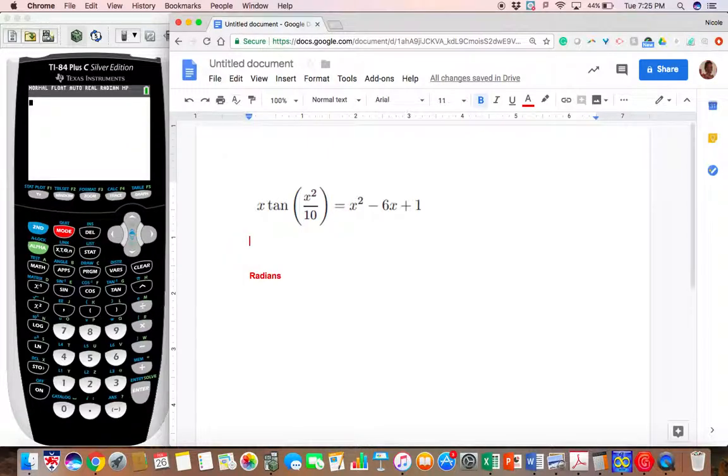It wanted the solutions between the domain zero and—I won't give official notation here—but 0 < x < 2π. So you want the solutions between zero and two pi.